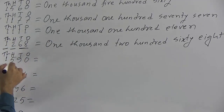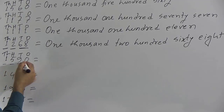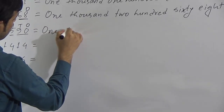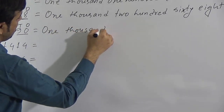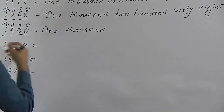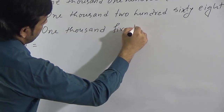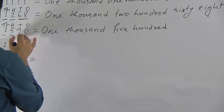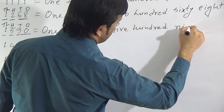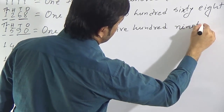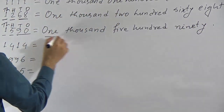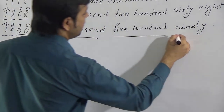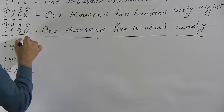Now go to the next question. 1's, 10's, 100, 1000. We can say one thousand five hundred, and combining the last two digits: ninety. One thousand five hundred ninety.